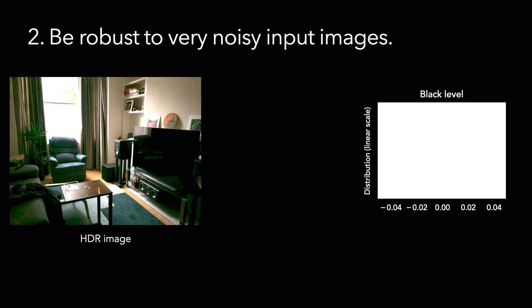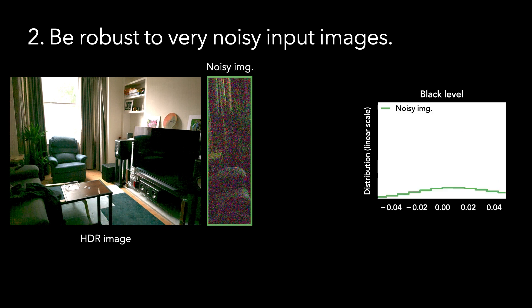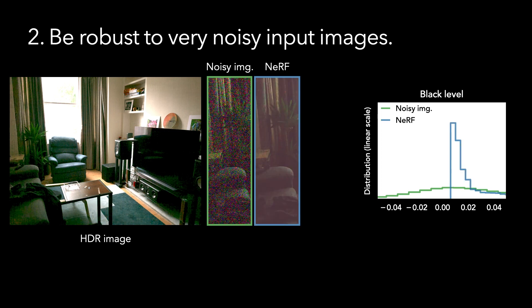Our second goal was to improve robustness to image noise. Since humans perceive brightness non-linearly, we tone map images to enhance contrast in the dark regions, and this makes noise much more visible in these areas. For example, this area around the yucca plant in the original input image is extremely noisy. This noise is so strong, it's nearly flattened out the brightness histogram around zero. The sensor readout includes many measurements that are below zero due to noise.